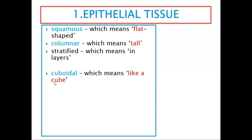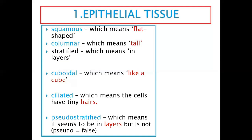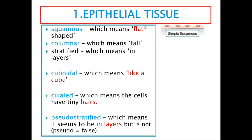Number three is cuboidal — the cells are like cubes, like ice cubes in the fridge. Then you have ciliated tissue, which has hair-like structures. Then you have pseudo-stratified. If someone says you are pseudo, it means you are false, not real. So pseudo-stratified means false layers — it looks like it has layers but it does not.